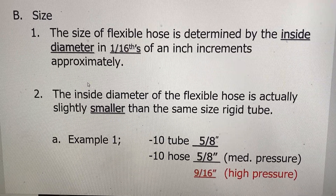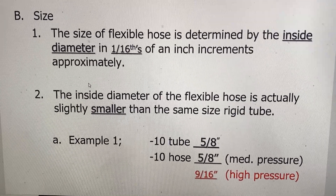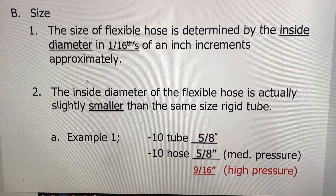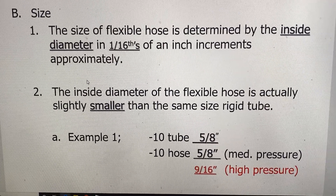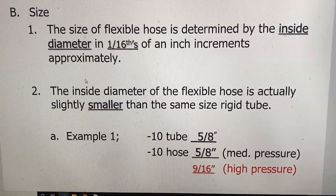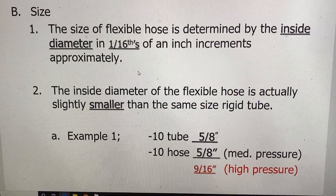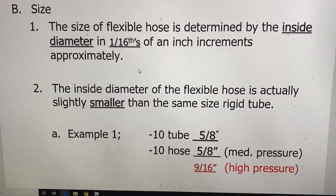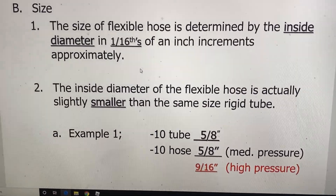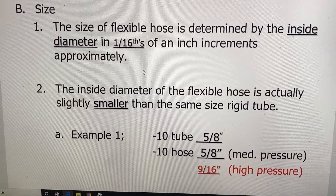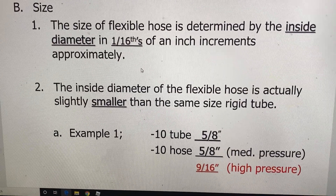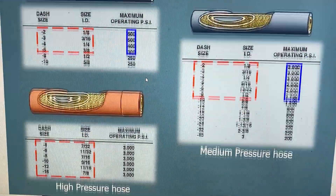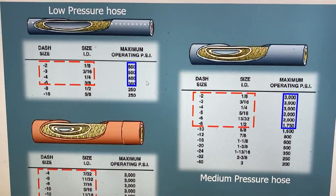As far as sizing goes, when we talked about rigid lines we discussed outside diameters sized in 1/16th of an inch increments. With flexible lines it's still 1/16th of an inch increments, but it's done from the inside. The reason is the flexible hose is determined by how much reinforcement it has — the more reinforcement, the bigger the line — so they can't size it by the outside. They have to size it by the inside diameter.